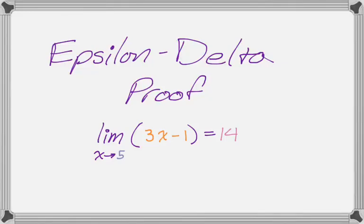In this video we're going to do an epsilon-delta proof that the limit as x approaches 5 of the quantity 3x minus 1 is equal to 14. That's a linear function, so these are pretty direct.